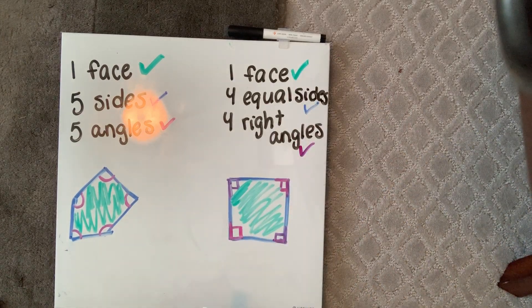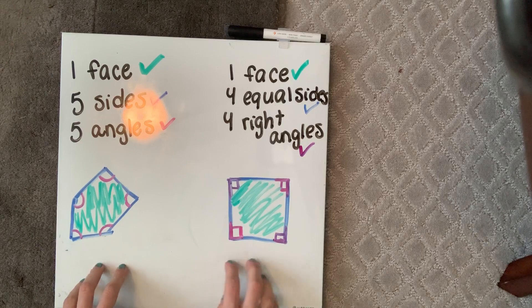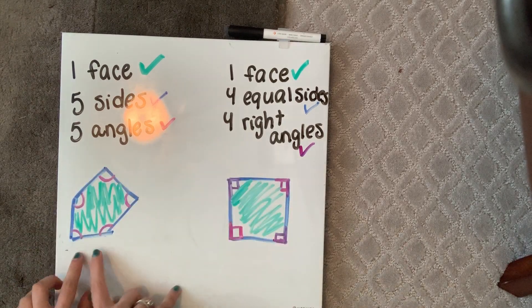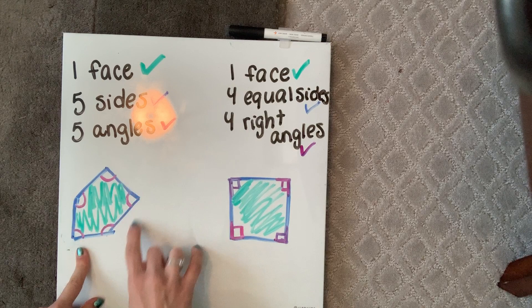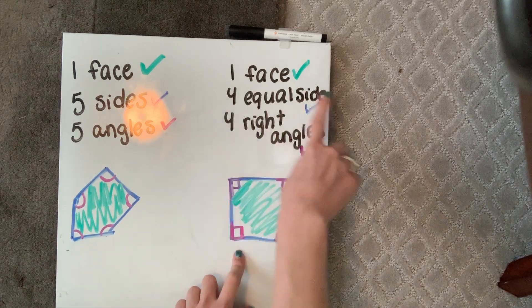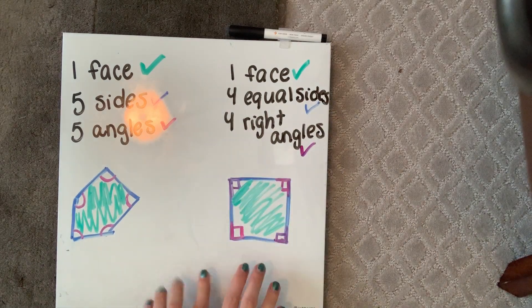We have drawn both of our shapes based on the information given. I have a pentagon right here, which means it has five sides. And then I have a square — four equal sides — right here. I hope you enjoyed this quick mini lesson about identifying shapes based on the information given. Go ahead and practice with your technology, seat work, and hands-on work. Bye!